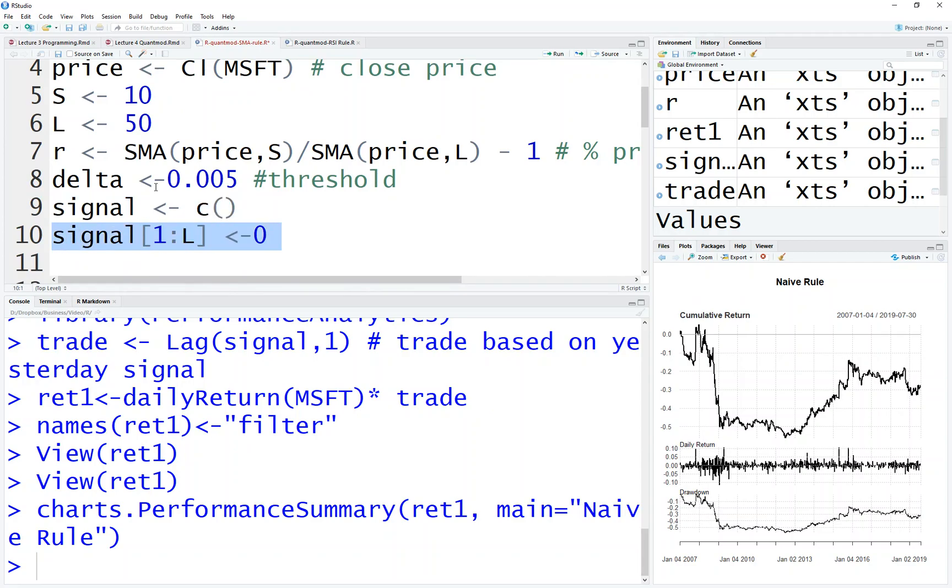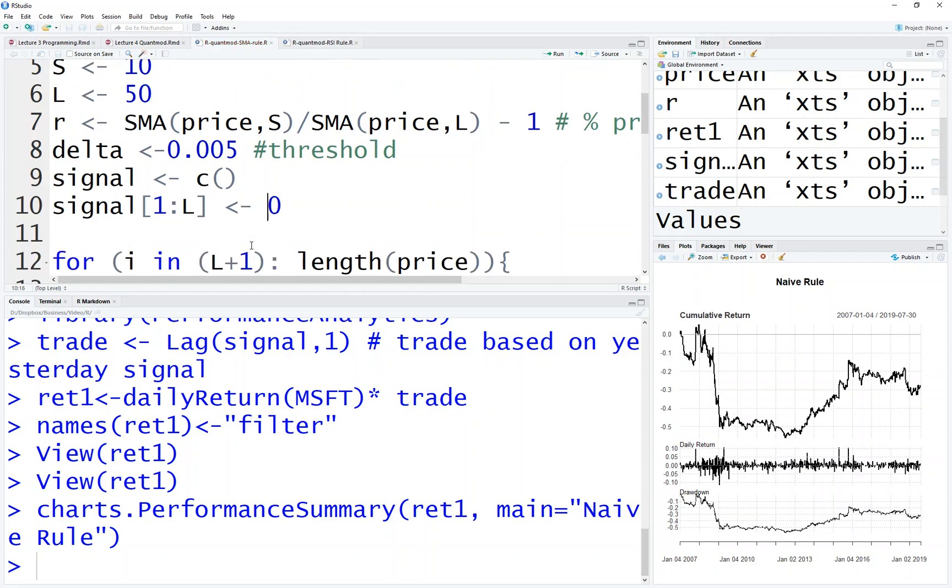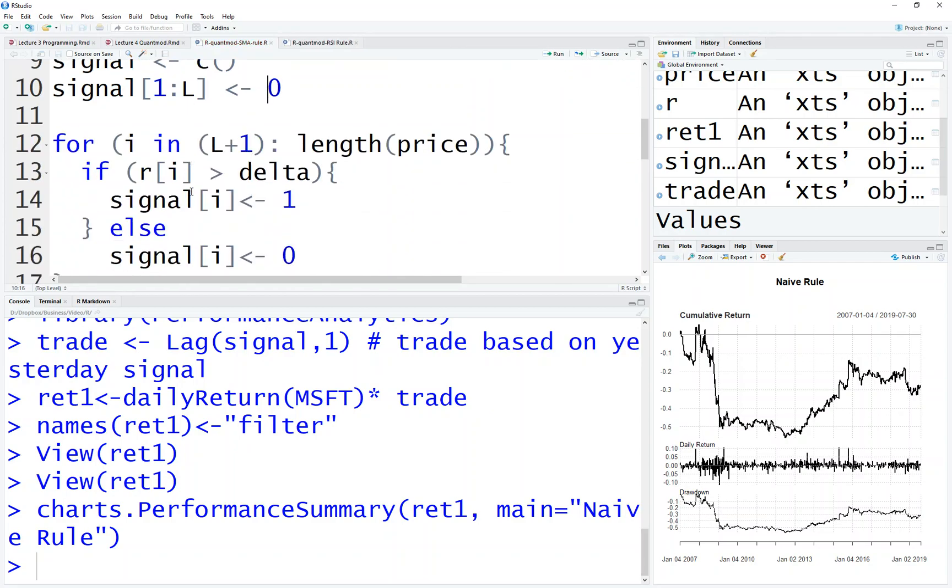Because we have to wait until L days in order to have the L-day SMA, for the first L days we don't do any trades, so the signal equals 0. And then for the rest, it's the same as the filter rule.